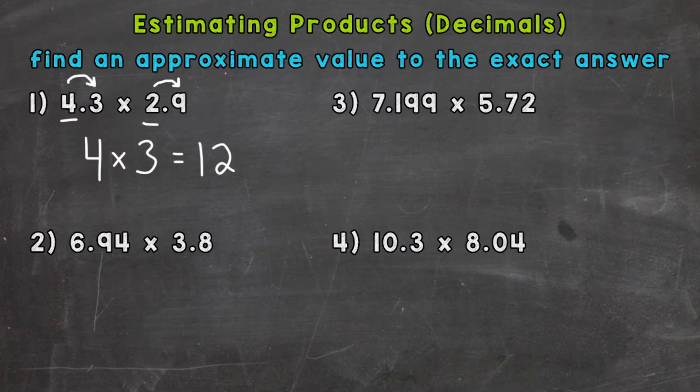So our estimate is going to be 12. So we can put 4.3 times 2.9 is approximately 12. So this squiggly equal sign means approximately, a close value.